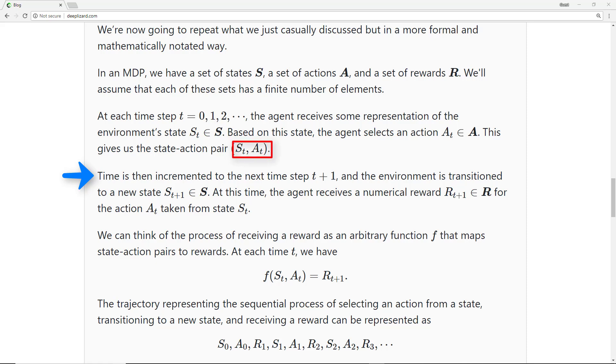Time is then incremented to the next time step t plus 1, and the environment is transitioned into a new state, represented by s_{t+1}. At this time, the agent receives a numerical reward, r_{t+1}, from the action taken from the previous state.